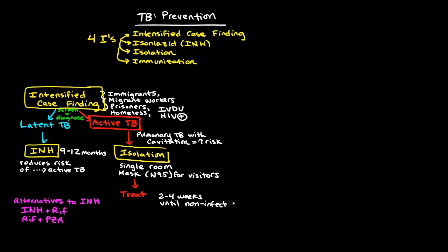The treatment for active TB is a more intensive regimen than INH alone — there will be further videos about treatment options. Also, regarding intensified case finding: when you find somebody with active TB, you must do contact evaluation. You look at all the individuals they may have been in contact with before diagnosis, to discover other cases of active tuberculosis needing treatment and isolation, and to identify where they got the infection or to whom they already spread it. This is a very important public health effort to reduce the continued spread of tuberculosis.